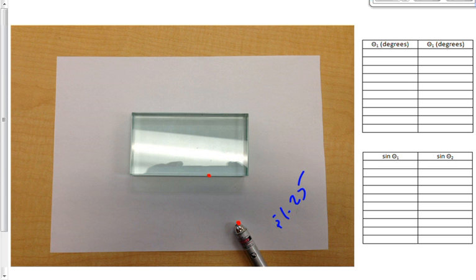You're also going to see a dot over here where it leaves the glass block. I want you to draw a little dot on your paper where you see those dots. The dots on the glass block and the dot where the light leaves the laser beam. Does that make sense?